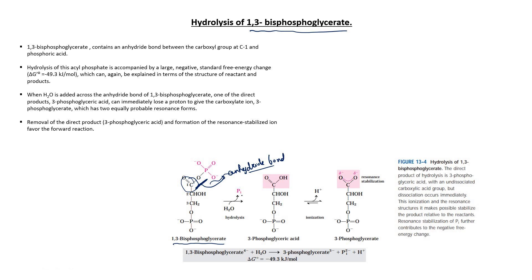The bond between the carboxylic group and phosphoric acid is called an anhydride bond. On hydrolysis of this acyl phosphate, 1,3-bisphosphoglycerate, inorganic phosphate is released and 3-phosphoglyceric acid is formed. 3-phosphoglyceric acid immediately ionizes to form 3-phosphoglycerate, which undergoes resonance stabilization. Due to this resonance stabilization, the free energy of hydrolysis of 1,3-bisphosphoglycerate is large and negative: minus 49.3 kilojoules per mole.